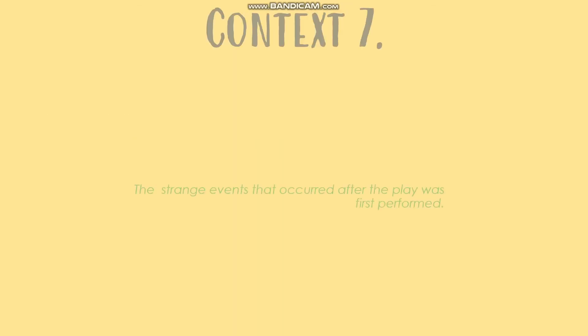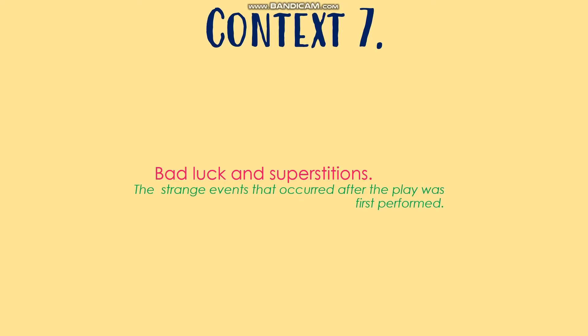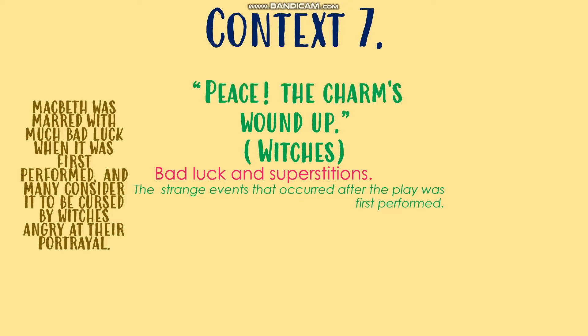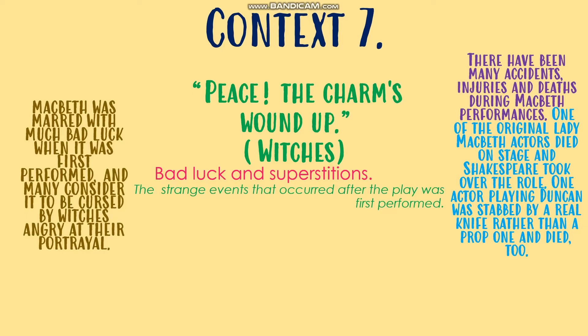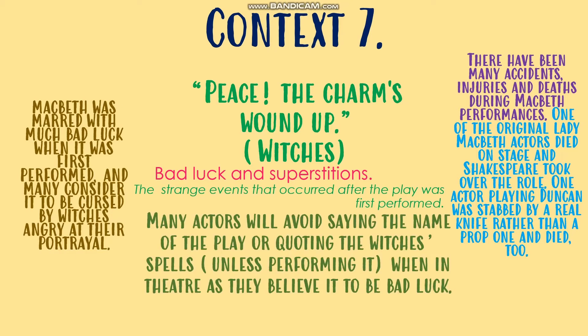Context piece seven is the strange events that occurred after the play was first performed. This play was thought to be cursed by witches angry at the way they were portrayed and the fact that some of their rituals were included. One of the actors who played Lady Macbeth actually died, and Shakespeare had to finish the play as Lady Macbeth. As well as this, someone playing Duncan was stabbed by a real knife rather than a prop knife and died. For this reason, many actors now avoid saying the name of the play — they call it 'the Scottish play' instead — and very rarely quote the witches' spells unless they're performing, because they're worried about becoming cursed.